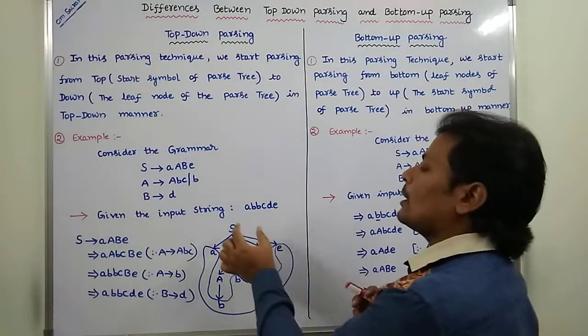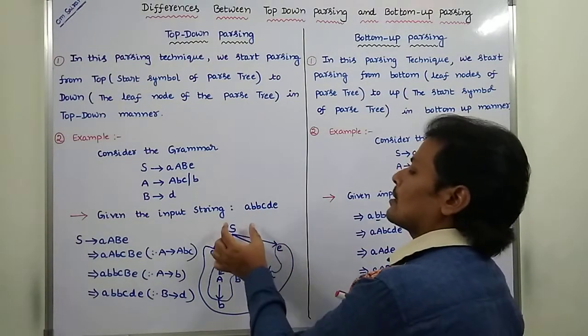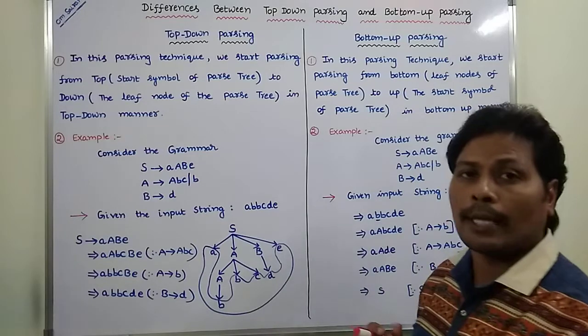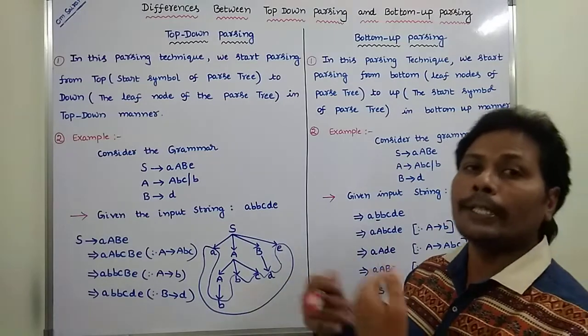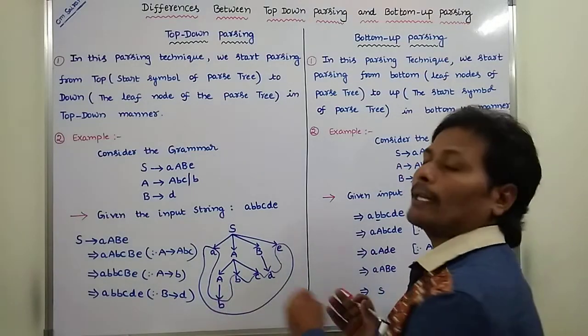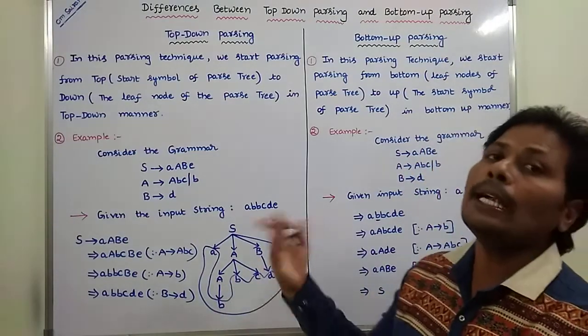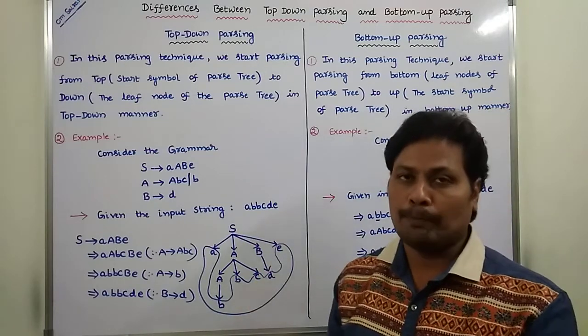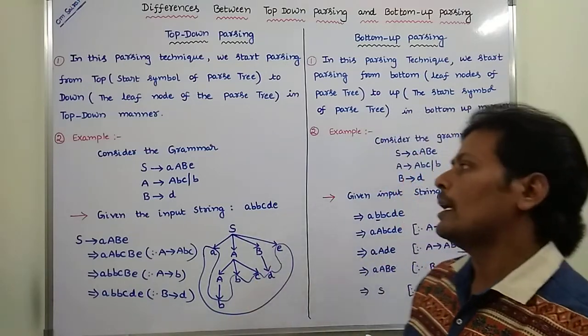We start from the start symbol of the parse tree and go down to the leaf nodes of the parse tree in a top-down manner.